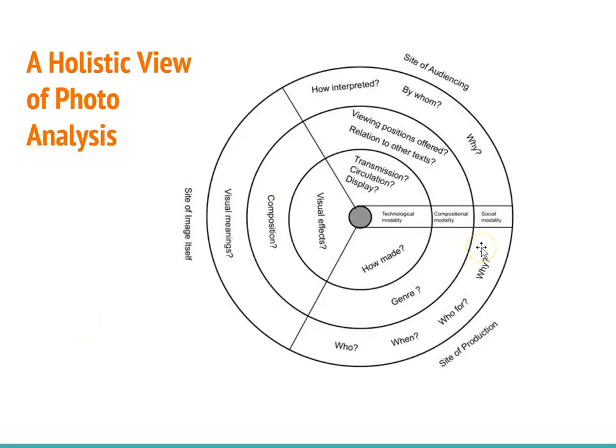This diagram is taken from Rose's work, and it shows the three sites of images often considered by researchers. We have the site of the image itself, where we're thinking about what is the composition of the photo, what are the visual effects and visual meanings. We have the site of audiencing, which is thinking about who views the images and why, and then the site of production, which considers how photos are made, what the genre is, who made them, why they made them, and for whom they were made.